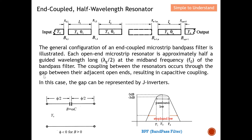The coupling between the resonators occurs through the gap between their adjacent open ends. Because they are spaced quite near to each other, there is some form of coupling — this form of coupling we know as capacitive coupling. In this case, the gap can be replaced by a J-inverter, as illustrated here.